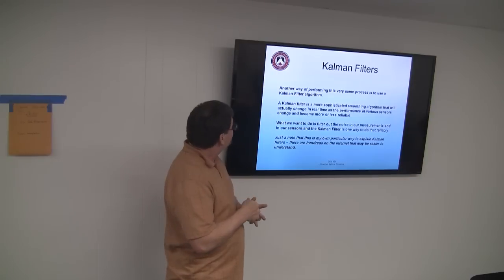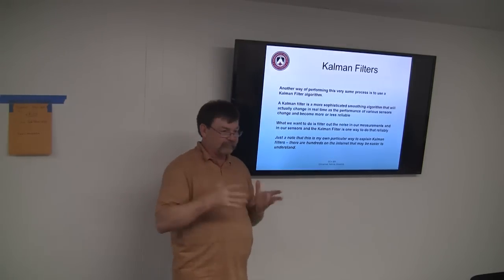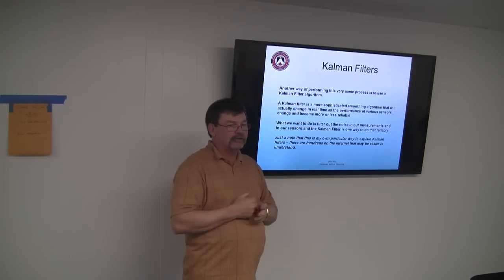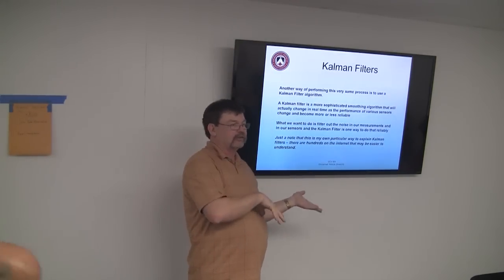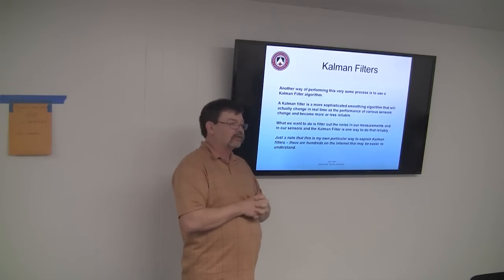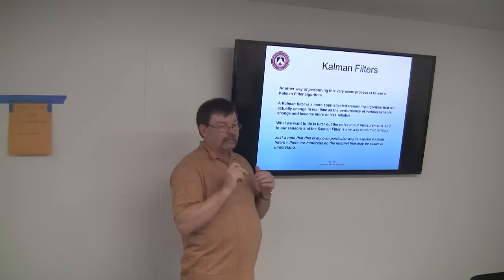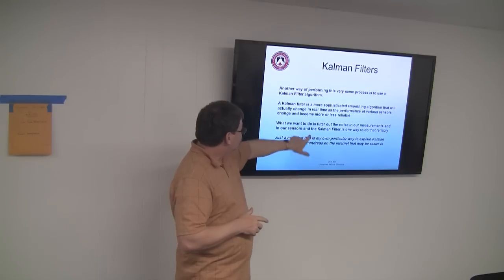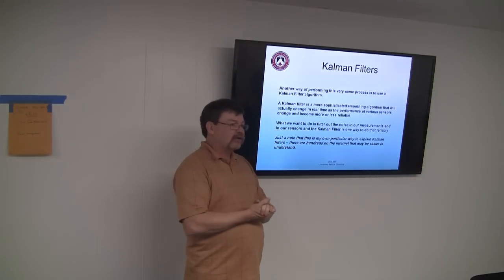This is part of the unmanned ground vehicle course. A Kalman filter is a way of getting the errors out of your sensors and figuring out from sample to sample, as you're moving along, what sensors you can trust. It's very good at removing noise out of sensor measurements, averaging out the noise, and giving you a good position estimate based on the best information the vehicle has.